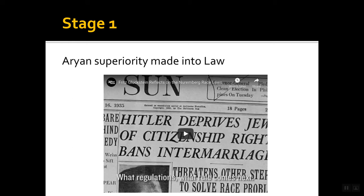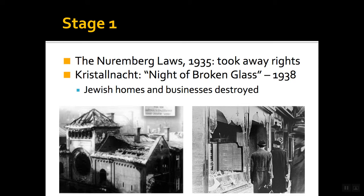First, it was about making laws to help Aryans be successful — more specifically, to marginalize and deprive other people of rights. You guys already should know about the Nuremberg laws from the sources you analyzed. Hitler passed the first set of Nuremberg laws in 1935 and continued passing them throughout his time as Führer. The Nuremberg laws took away the rights of Jewish people: they were barred from being citizens, from voting, from practicing law, dentistry, and it just got worse and worse.